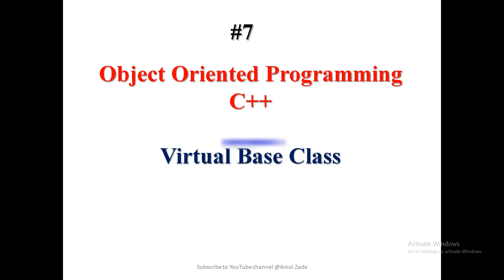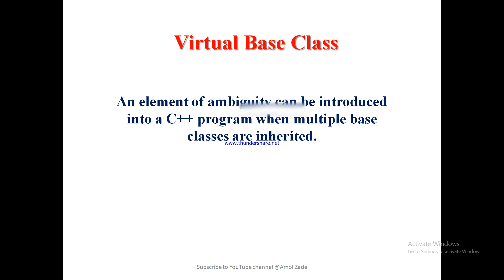From the word 'base class' we are already familiar. A derived class acquires the properties from the base class. The concept of virtual base class comes from a difficulty — basically, the definition of virtual base class is an element of ambiguity. The compiler is put into an ambiguous or uncertain state and gives an error. To solve that error, we use the virtual base class.